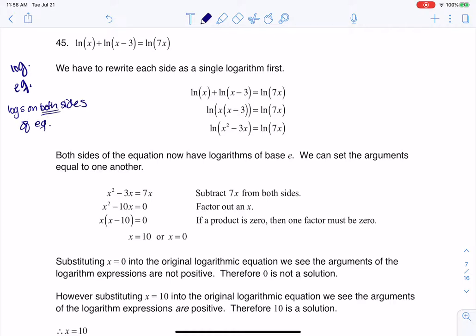And when there's logs on both sides, what you want to do is get the left side into one logarithmic term and the right side into one logarithmic term. Now the right side's ready to go, so that's awesome. But the left side has two logs.